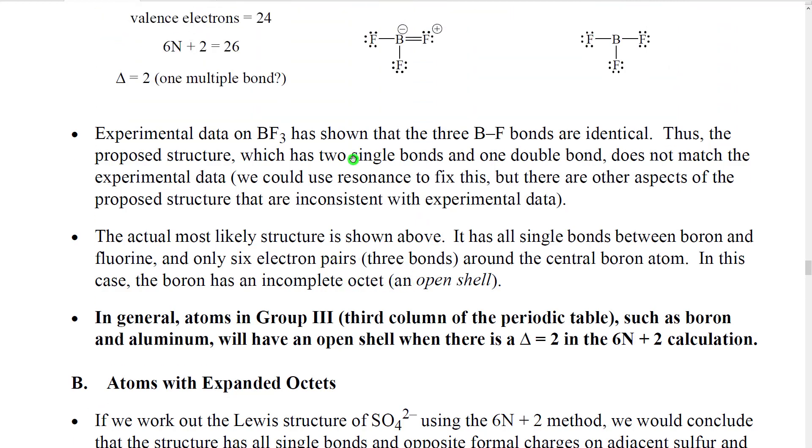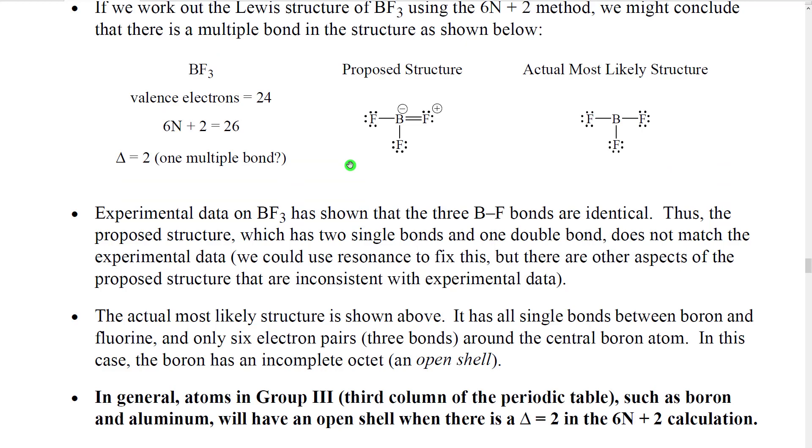So that's an example of a Lewis structure where there's an atom with an incomplete octet, an open shell, but the structure is a reasonable structure. And in general, we see this kind of thing with boron atoms in our formula and aluminum. So what you could do as just a rough rule to start with, if you are doing a Lewis structure with boron or aluminum, and you calculate an unsaturation of delta equals 2, leave an incomplete octet on the boron or the aluminum.